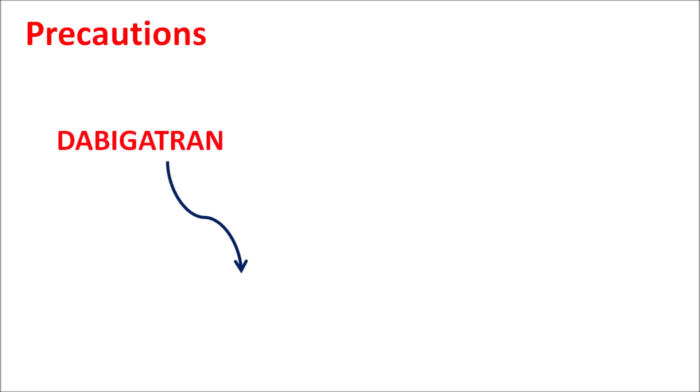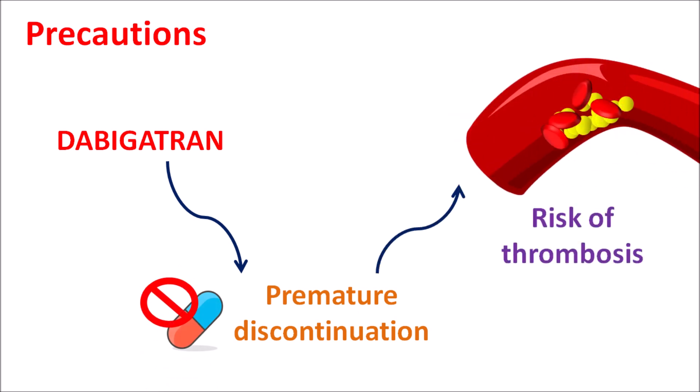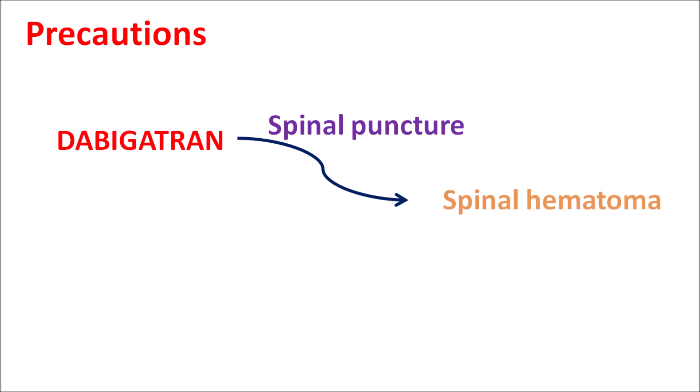Since dabigatran is an anticoagulant, premature discontinuation may increase the risk of thrombosis, resulting in increased risk of stroke and pulmonary embolism. This drug should not be stopped suddenly without completing the course. Additionally, when dabigatran is used alongside spinal or epidural anesthesia, it may increase the risk of spinal or epidural hematoma, which is highly fatal. Anesthesia should only be administered when drug levels are very low.